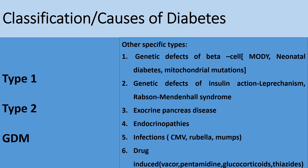Diabetes can be classified into type 1, where the predominant pathophysiology involves autoimmune destruction of the beta islet cells. This is the predominant type seen in children and is associated with the presence of autoantibodies against beta islet cells, components of the beta islet cells, or even insulin. Type 2 diabetes is more common in adults and is associated with increased insulin resistance, but over time even the secretion of insulin becomes affected.